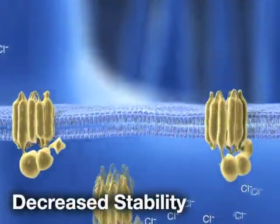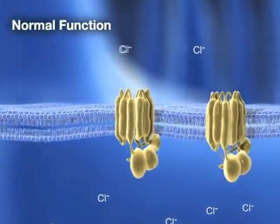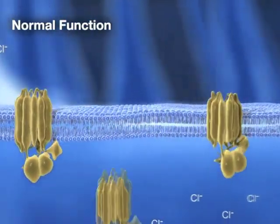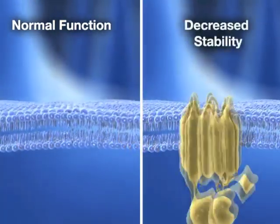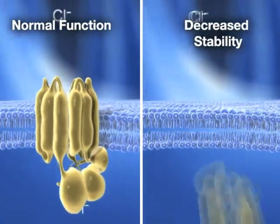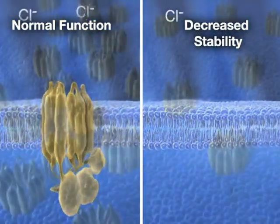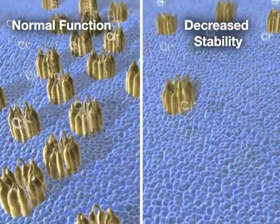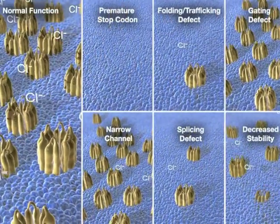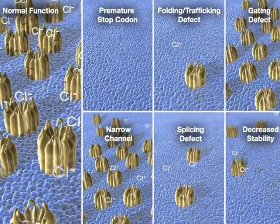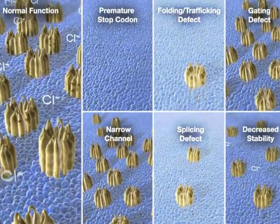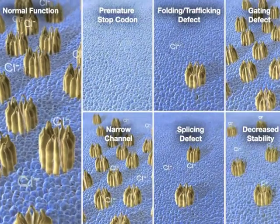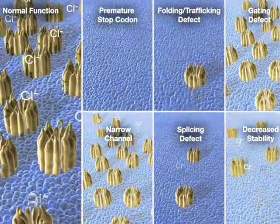Some references cite another group of mutations in which the normal amount of functional CFTR protein is produced and reaches the cell surface. However, due to an increased turnover rate, there is less functional CFTR remaining at the cell surface. As we have described, these cystic fibrosis-associated mutations in the CFTR gene can result in less CFTR protein at the cell surface, absence of CFTR protein, or dysfunctional CFTR protein at the cell surface.